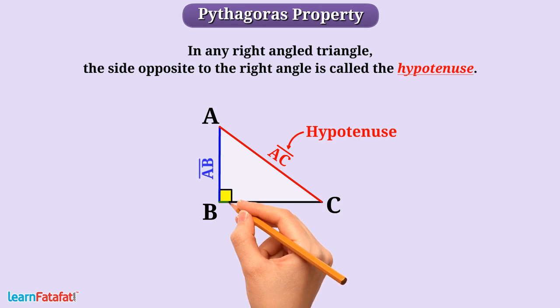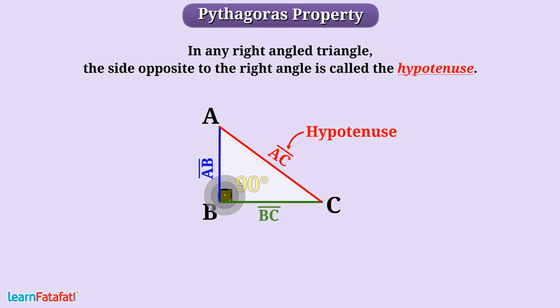Similarly, the sides forming the right angle of a triangle are called legs of the right angle triangle. So here AB and BC are legs of the right angle triangle.